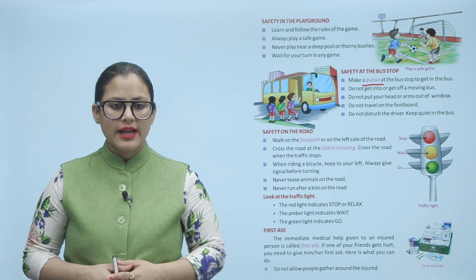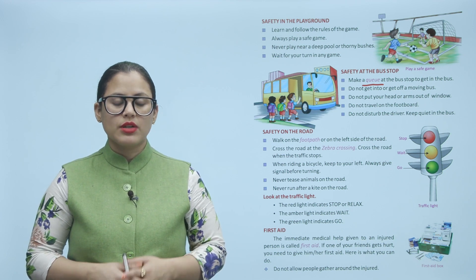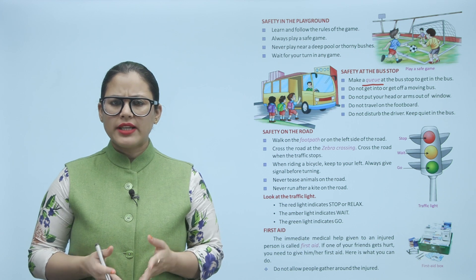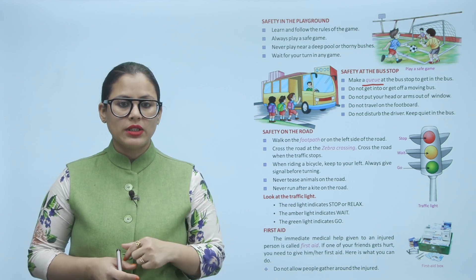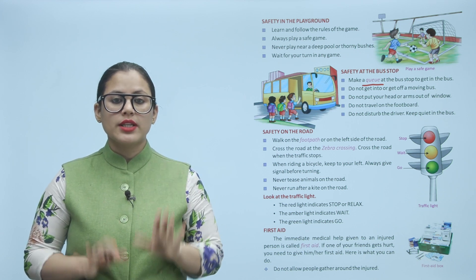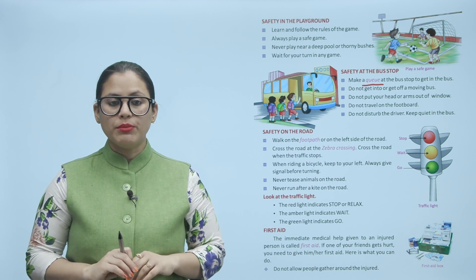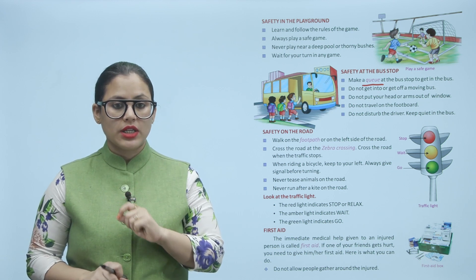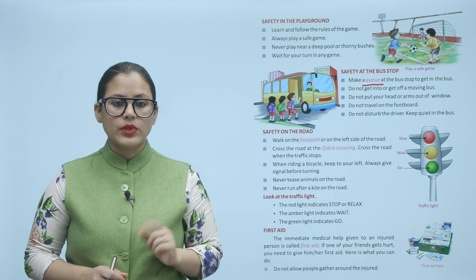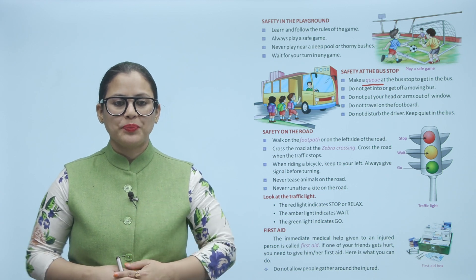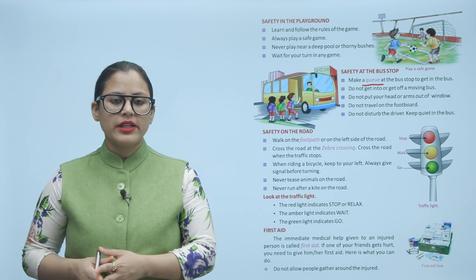Look at the traffic light: the red light indicates stop or relax, the amber light indicates wait, and the green light indicates go. Traffic light mein teen lights hoti hain: red light ka matlab hai stop and relax, amber yaani yellow light ka matlab hai wait, aur green light ka matlab hai you can go now.